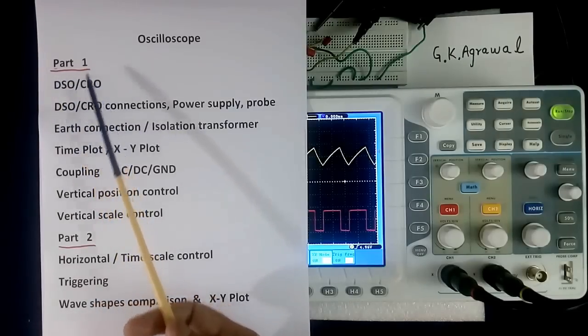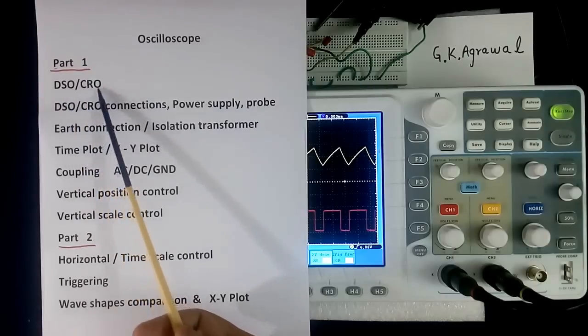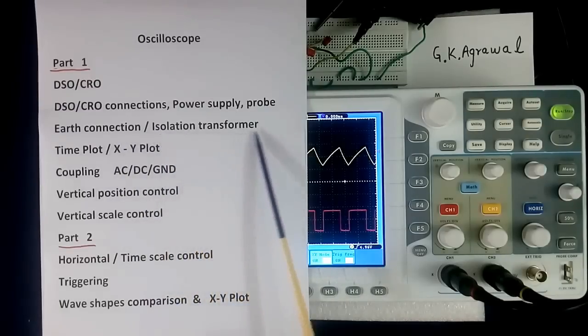In part 1, we will discuss DSO, CRO. What is the difference? Are they same or different? Their connections, power supply, probe connection, earth connection, and isolation transformer.